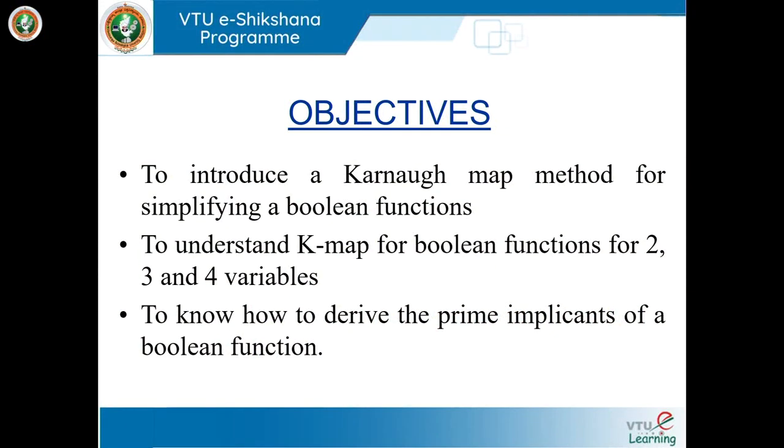This Karnaugh simplification method is very authentic and very easy to use when we have more than a few input variables. We will understand the K-map for Boolean functions with 2, 3, or 4 variables — how to draw the K-map and how to use it to simplify a Boolean expression. We will also cover what prime implicants are and how to identify them using the K-map.